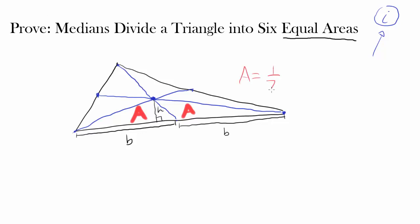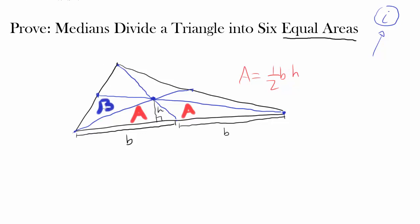To recap: if two triangles have the same base and the same height, their areas are equal. These two triangles share the same base and the same height from the common vertex, so their areas must be the same. We've shown these two triangles have the same area. Using similar logic, we can show these two triangles also have the same area — call it 'b' — and these two triangles have the same area — call it 'c'.